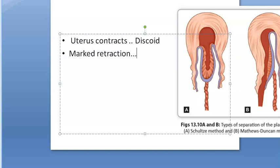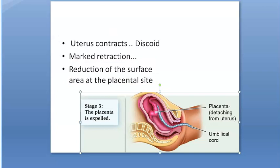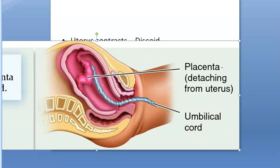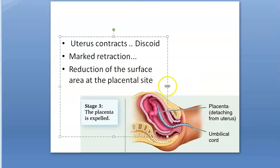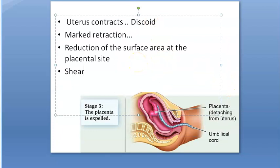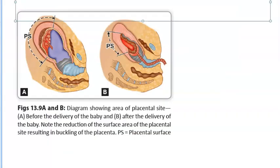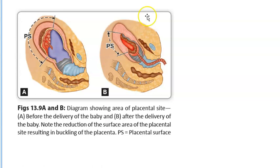There is marked retraction of the uterus, resulting in a reduction of the surface area at the placental site. This creates a shearing force between the placenta and the placental site. You can see how large the placental site is initially and how much it has shrunk — that is what drives the placenta to start separating.